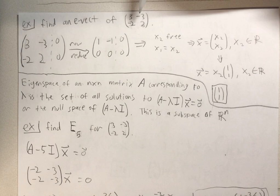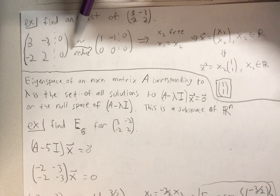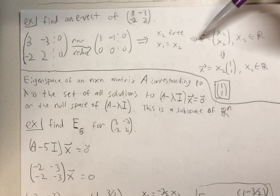Find an eigenvector of 3, negative 3, negative 2, 2. To do this, we just augment this matrix with 0, 0 and row reduce to get this. And so X2 is our free variable and X1 equals X2.